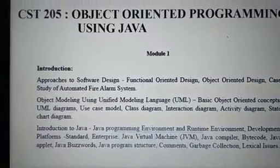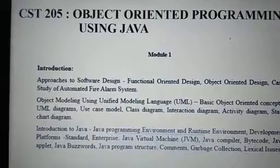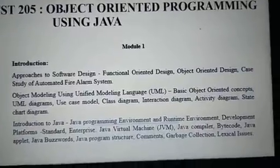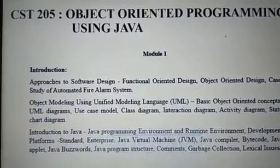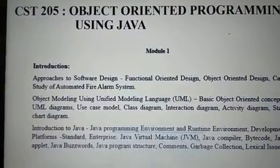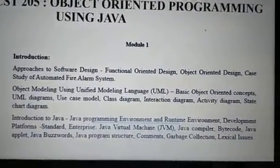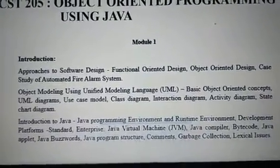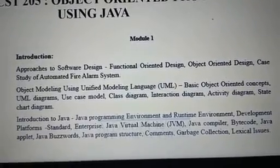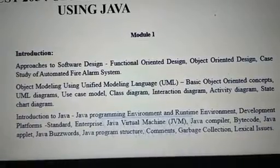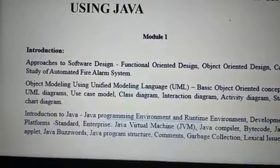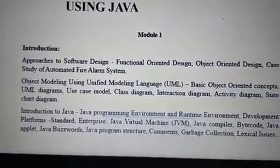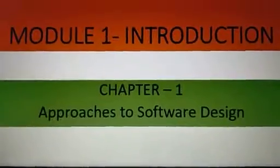Hi students. I am going to go to Java as CST-205. If you don't know how to do it, you will be able to study up-to-date. Java is simple. So we are going to start in the first module. Java is developed by James Gosling. In the first three topics: Approaches to Software Design, Functional Oriented Design, and Object Oriented Design.